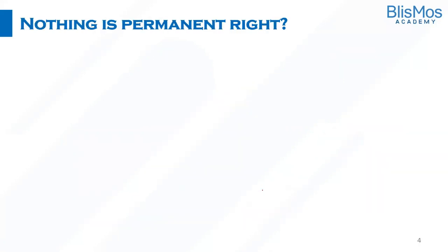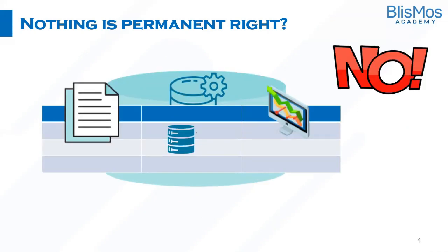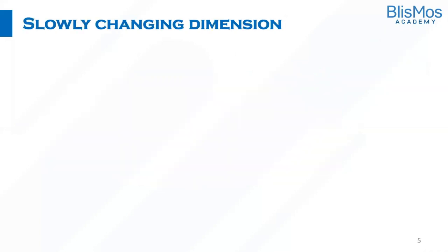Hold on. The question is: is anything on this earth permanent? No, nothing is permanent. If nothing is permanent, do you expect the data in the data warehouse to remain non-volatile? When we said non-volatile, it is for a specific period of time. As compared to databases, data in a data warehouse is non-volatile, but it does change over a period of time.